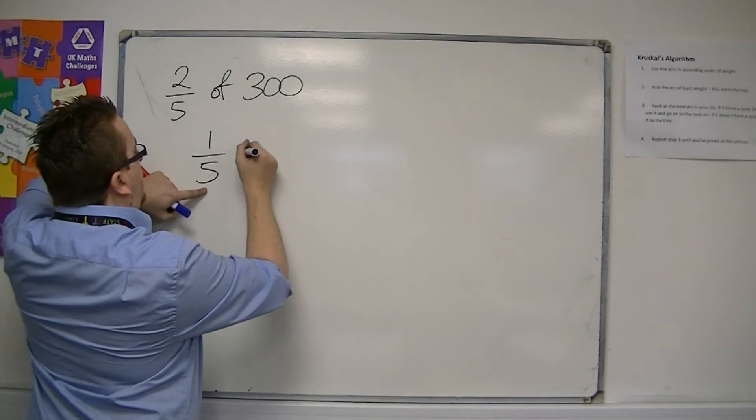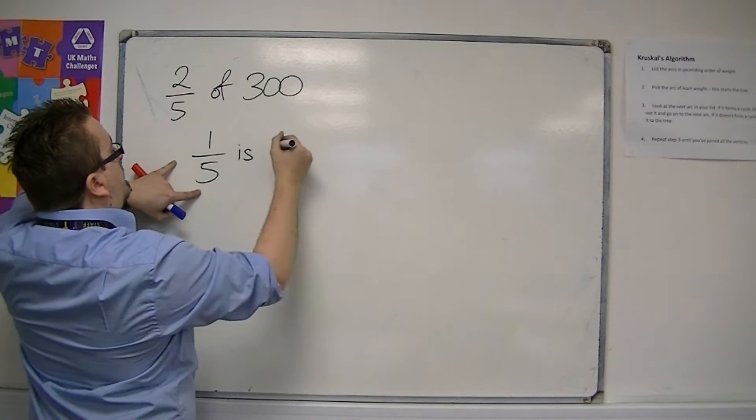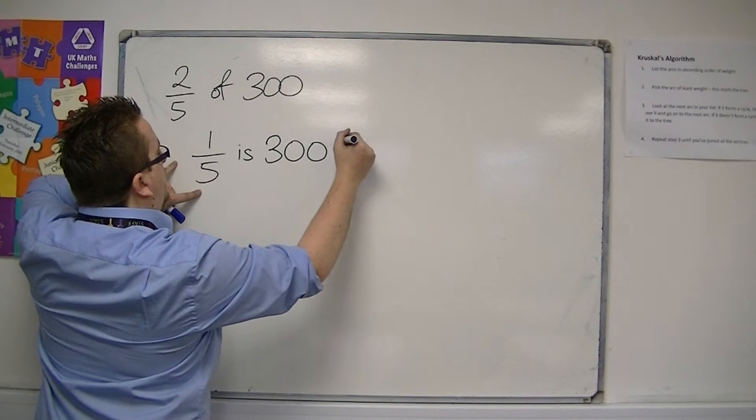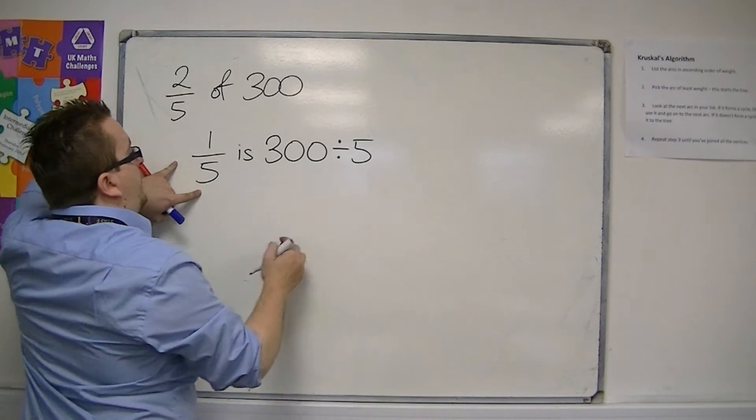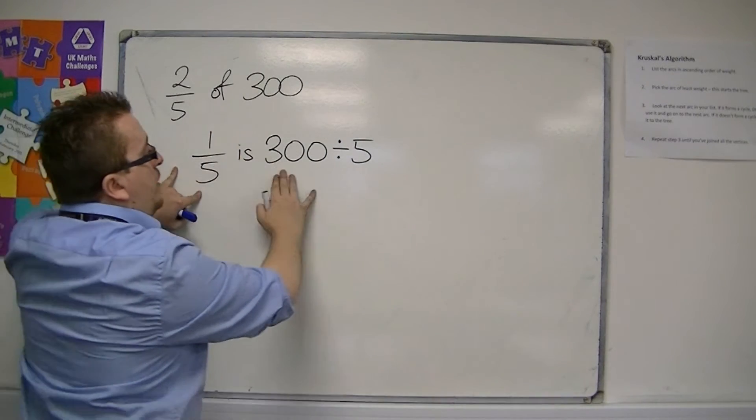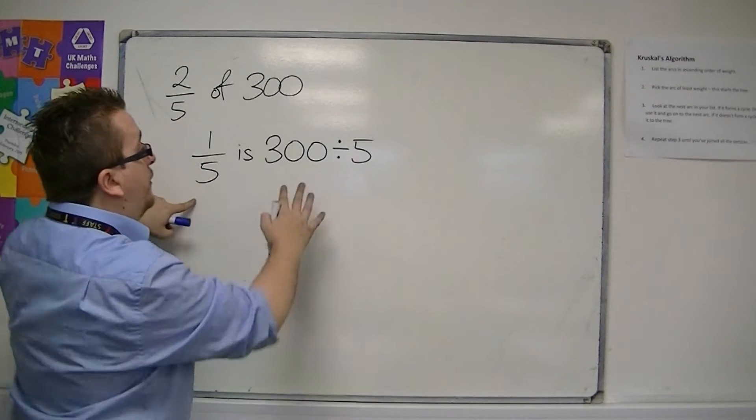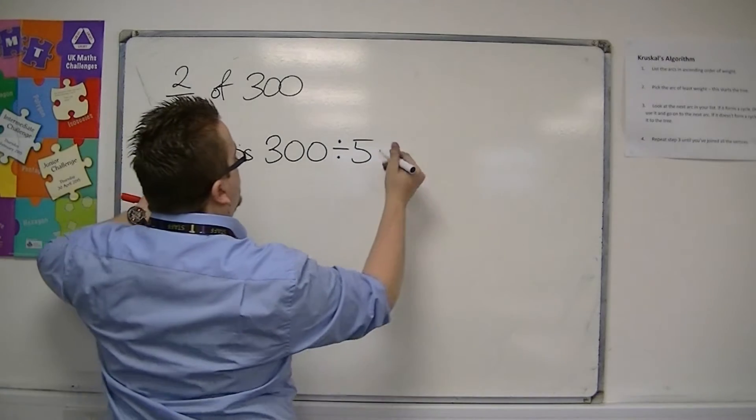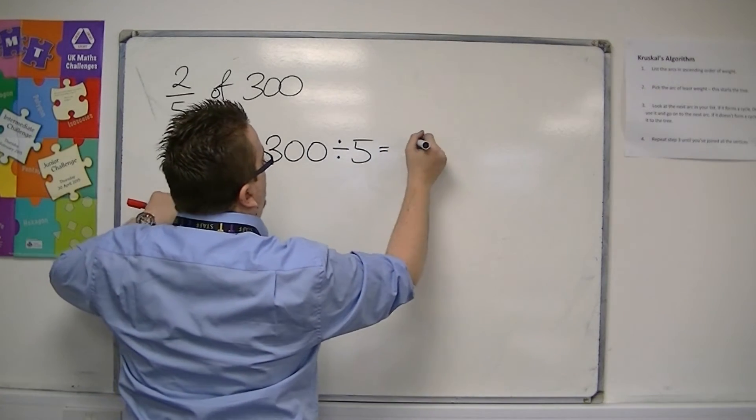So one-fifth could be found by doing 300 divided by five. So if it had been one-eighth, I would divide 300 by eight. So you're dividing by the denominator. So 300 divided by five is 60.